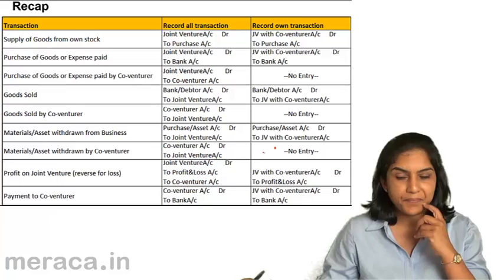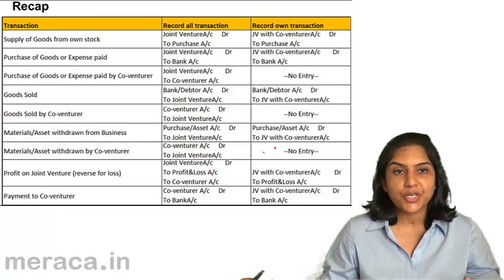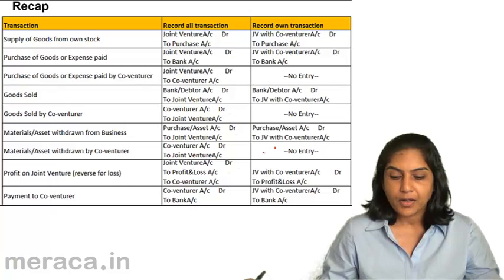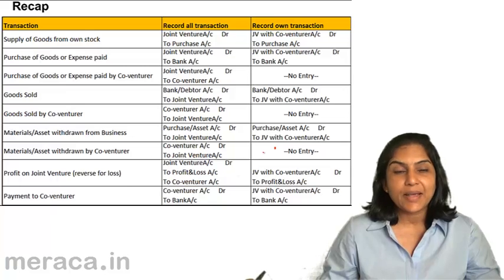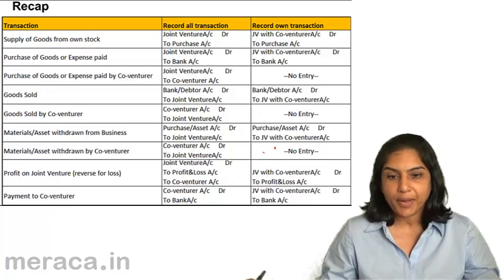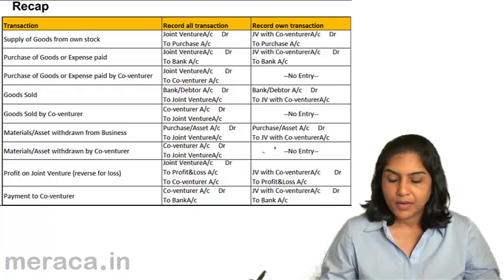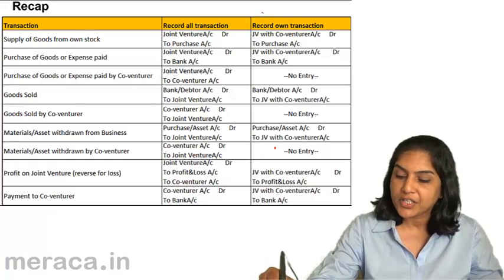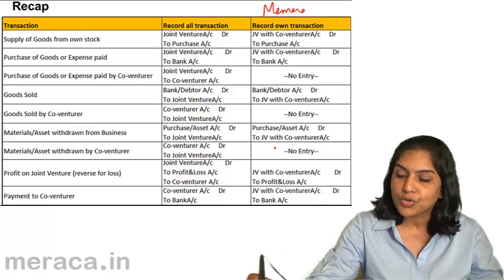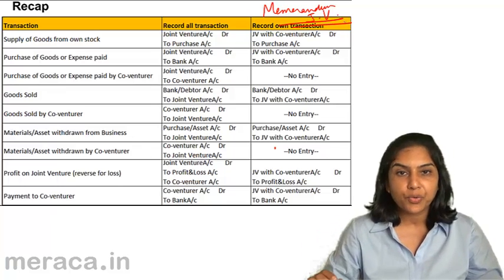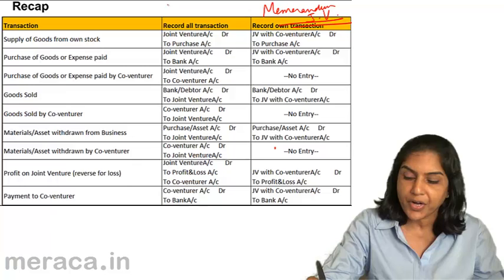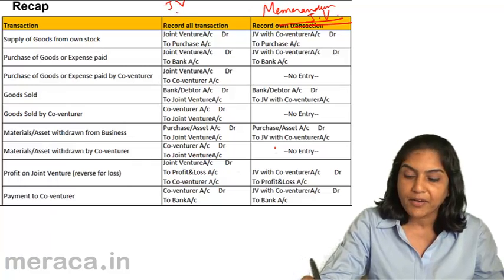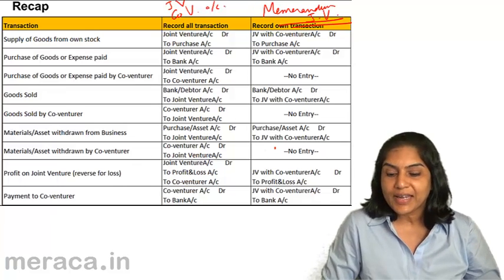From the last quiz, we discussed two sets of accounting entries, both when a separate set of books for joint venture is not kept. One was where all transactions are recorded and where only own transactions are recorded. In case of only own transactions, we would also have to prepare a memorandum joint venture account to ascertain profit or loss. The accounts involved are a joint venture account and the co-venturer's account — Akash will have Bikash's account in his books.